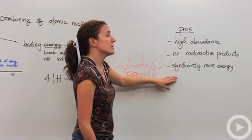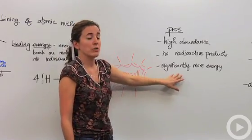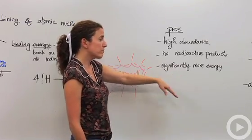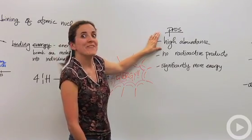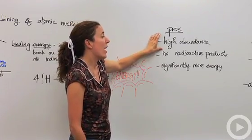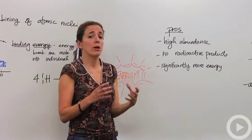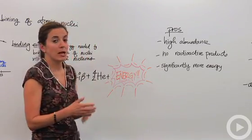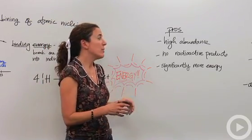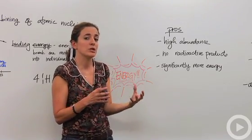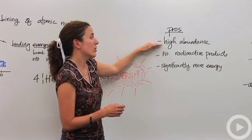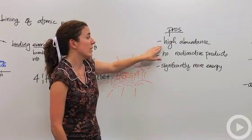So here are some pros of nuclear fusion. The things that we need to do fusion, we have high abundance of them. We have these small particles on the planet - hydrogen, helium, things like that that are very small. On this earth we have a lot of these smaller particles. We don't have as many bigger particles that are used for nuclear fission, so that's a really good thing.